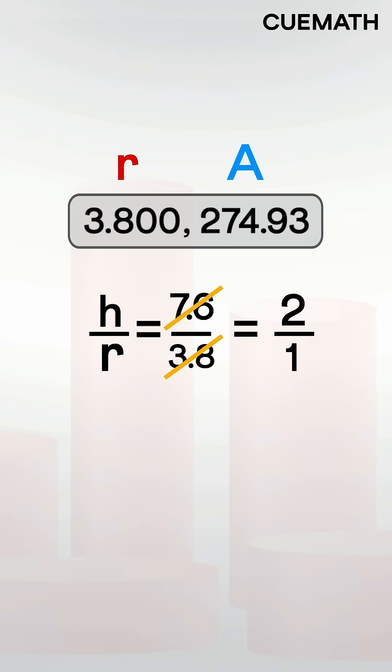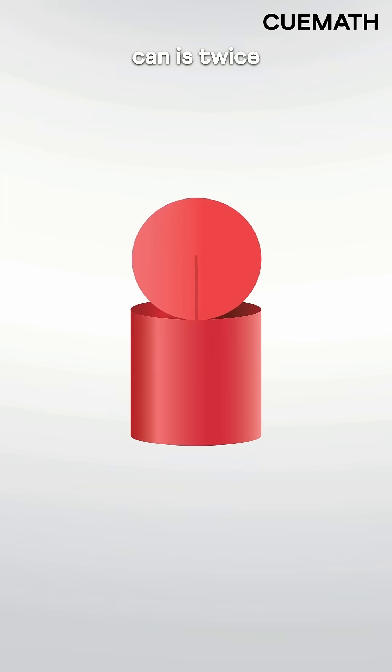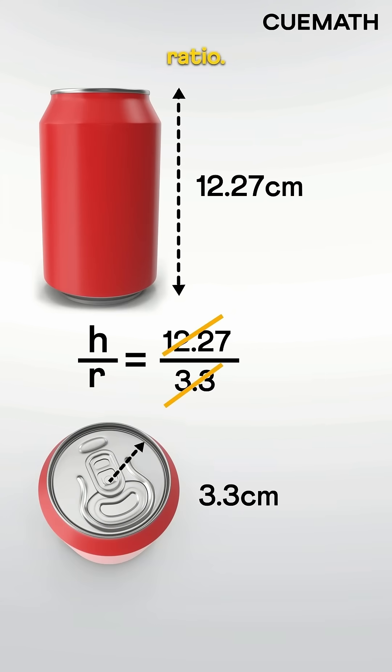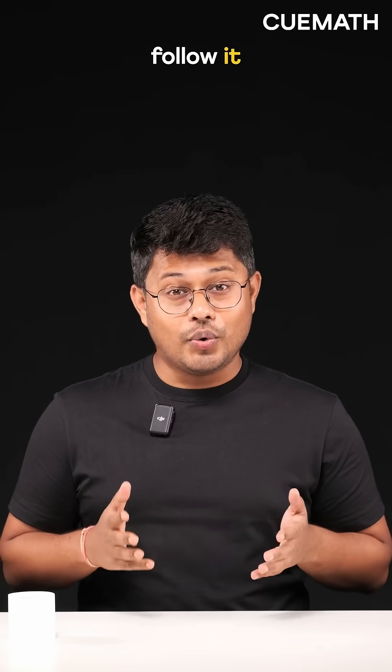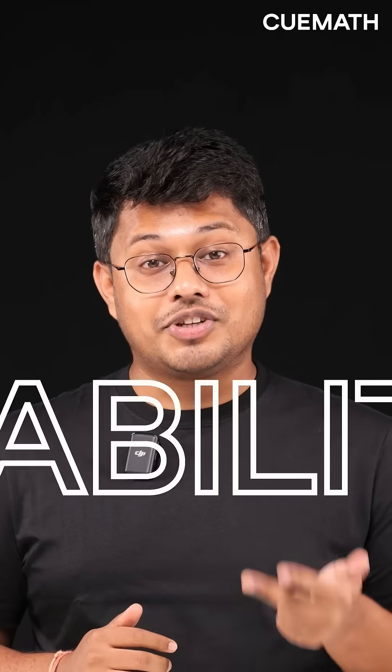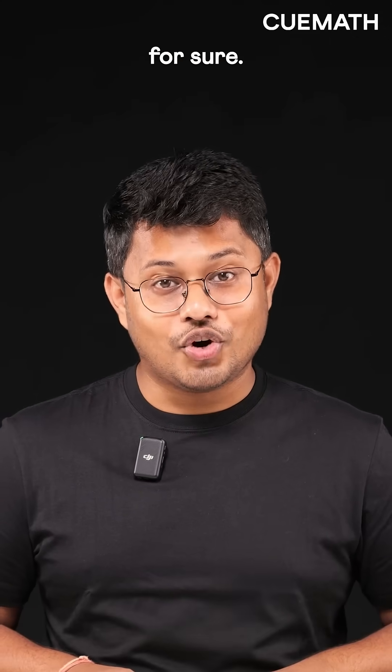Notice the ratio of height to radius is 2 to 1. So an ideal can is twice as tall as its radius, but most cans exceed this ratio. So why don't companies follow it? Looks, usability, or stability? Can't really say, but one thing's for sure...